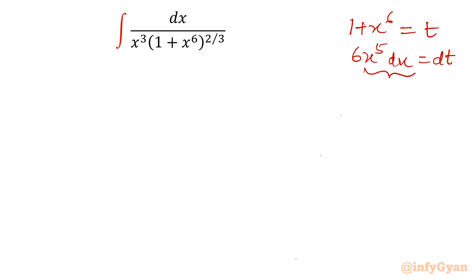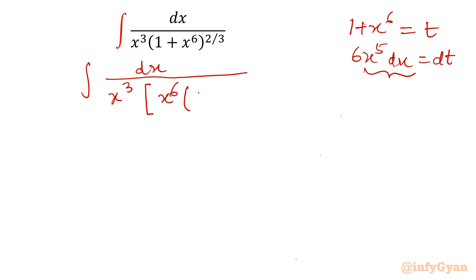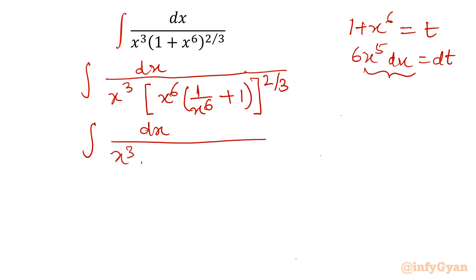Let us take x⁶ common from the parenthesis. We can write x³ is already there. Now in square brackets, taking out x⁶ gives us (1/x⁶ + 1), with the power as it is. So we write dx over x³ times x⁶ to the power 2/3 times (1/x⁶ + 1) whole power 2/3.